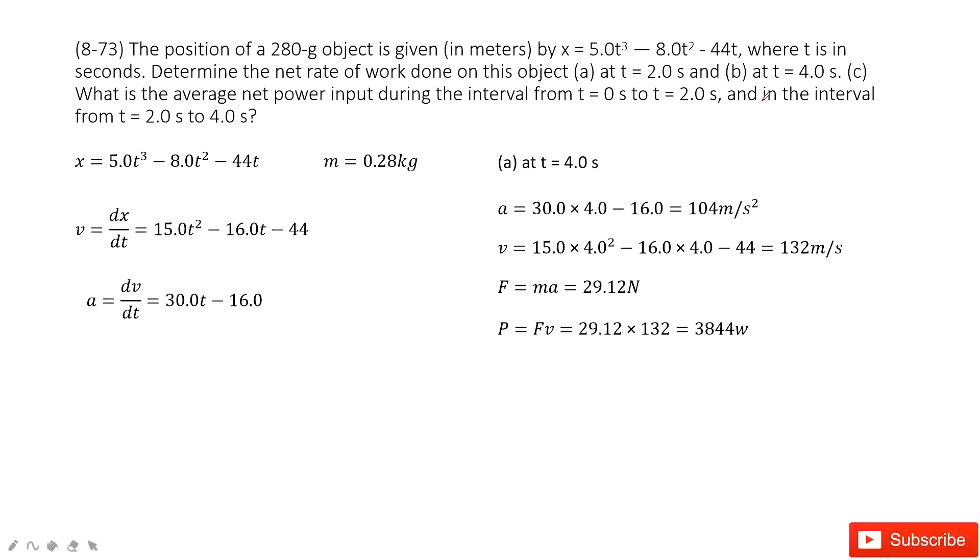The second one is very easy. You just need to find the power at t equal to 4 seconds at this certain point of time. So we just repeat everything. Get the acceleration, get the velocity, and get the force at this point of time. And then we use the power equal to the force times velocity, we get the final answer.